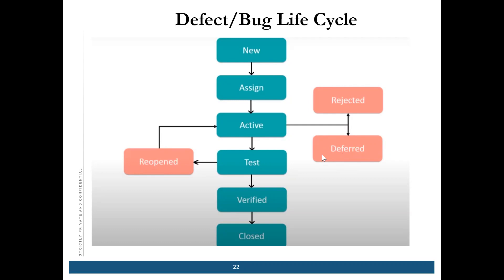Deferred means the bug needs to be resolved in the next cycle. It's not a relevant defect for this particular sprint or this particular build — when we introduce those modules in a later point of time, that's when we will take care of that defect. So that is a deferred bug.